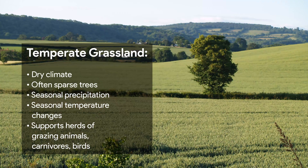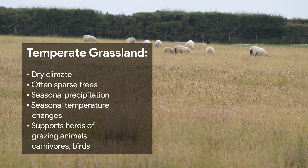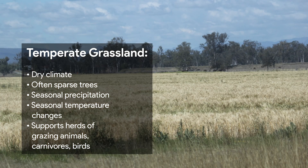Temperate grassland is found in dry climates, such as in the centre of North America and Asia. This is grassland with scattered, often sparse trees, with seasonal precipitation and temperature changes. This habitat often supports large herds of grazing animals, carnivores and birds.